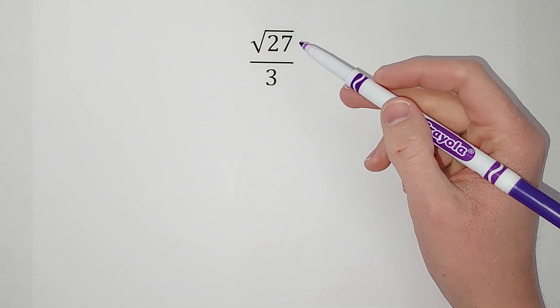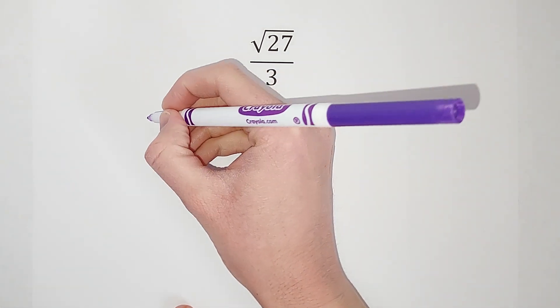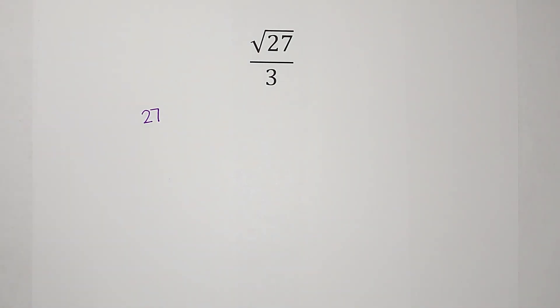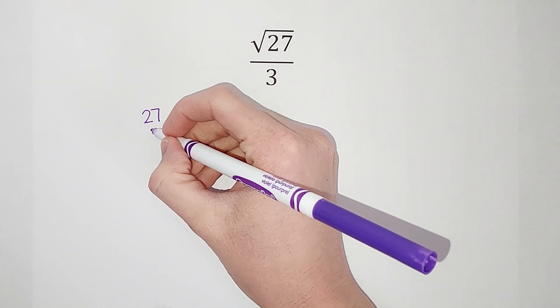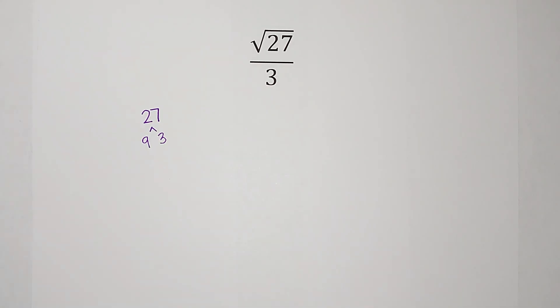So what we're gonna do is break this 27 down and see where we can go from there. Over here we're going with 27, we're gonna see how I can break it down and see if there are any numbers that have a square root. So I know that 9 times 3 gives me 27.